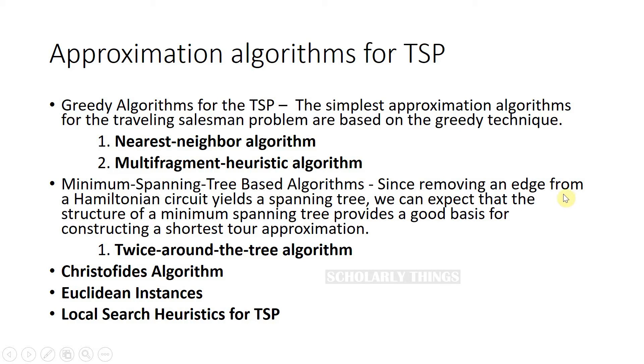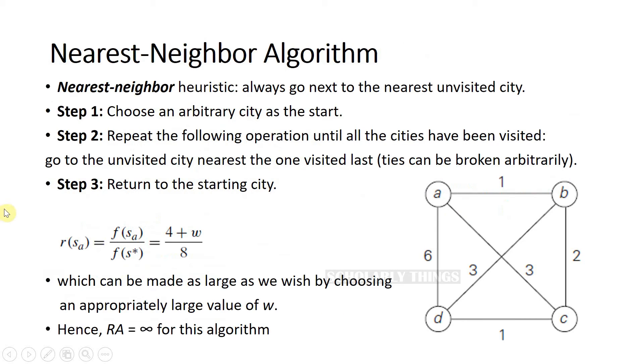Since removing an edge from a Hamiltonian circuit yields a spanning tree, we can expect that the structure of a minimum spanning tree provides a good basis for constructing a shortest distance tour approximation. Twice around the tree algorithm comes under the same. We'll also see what is Christofides algorithm, Euclidean instances, and local heuristics for TSP.